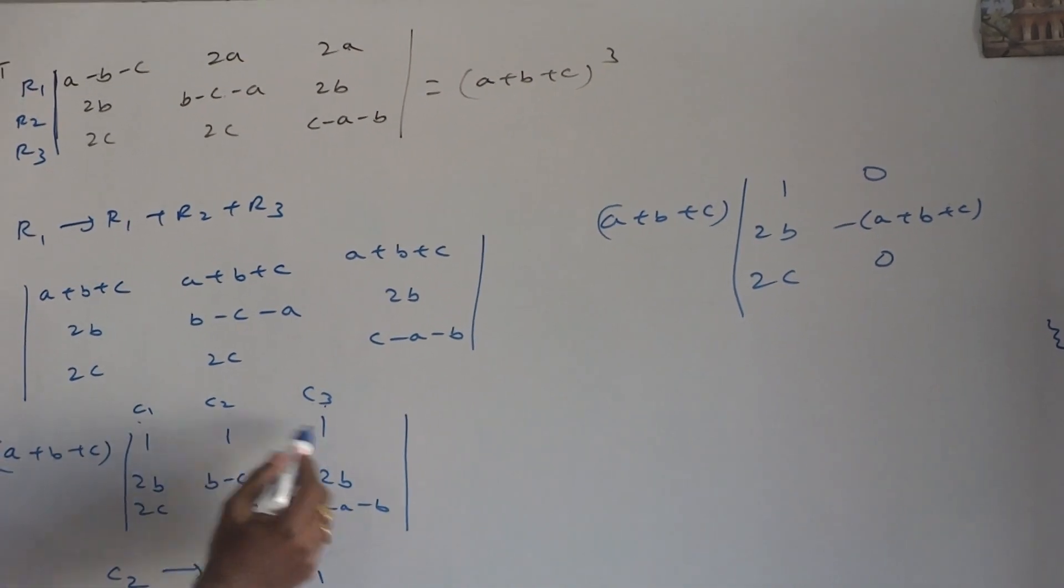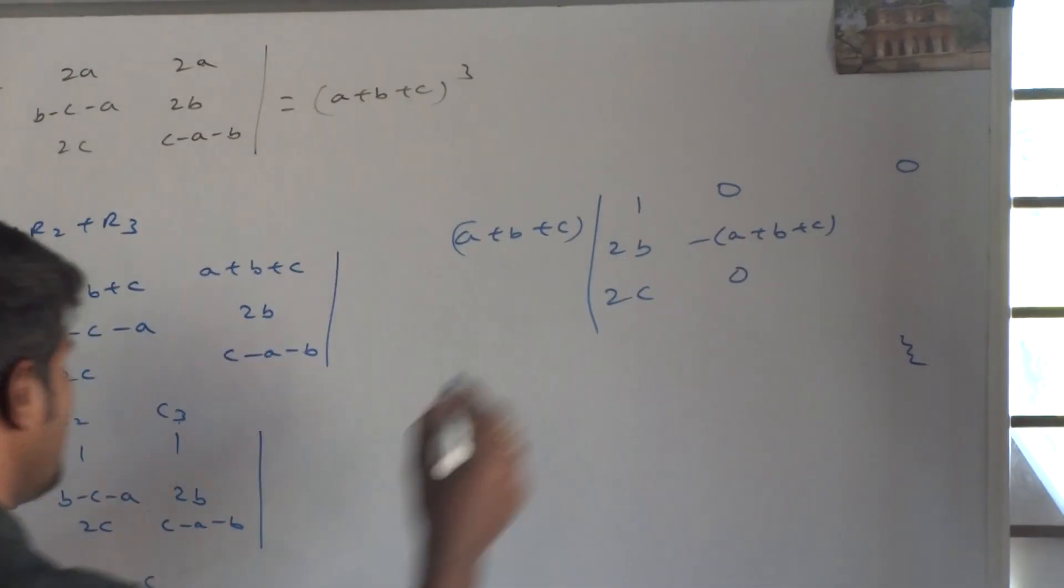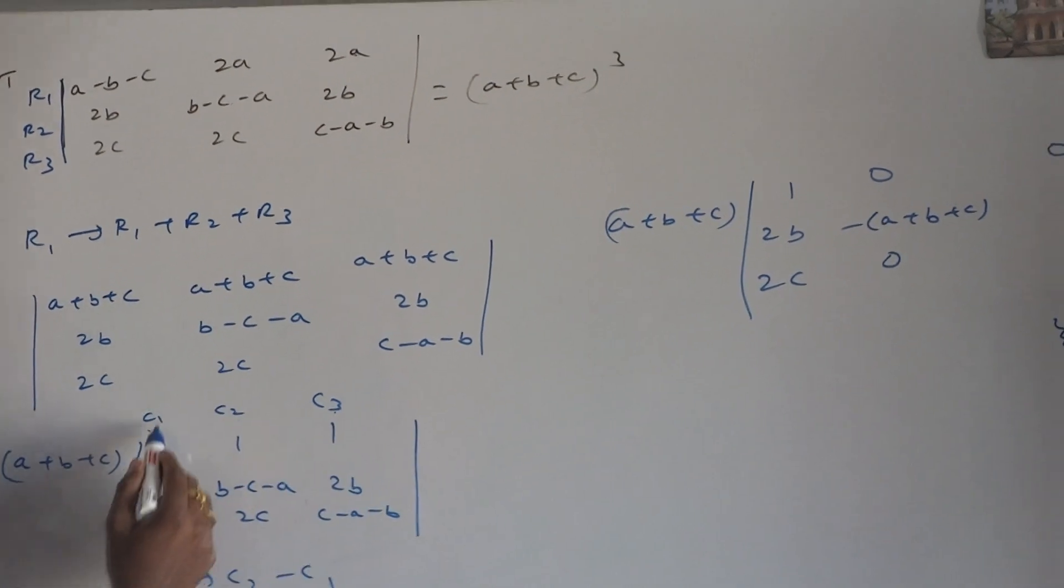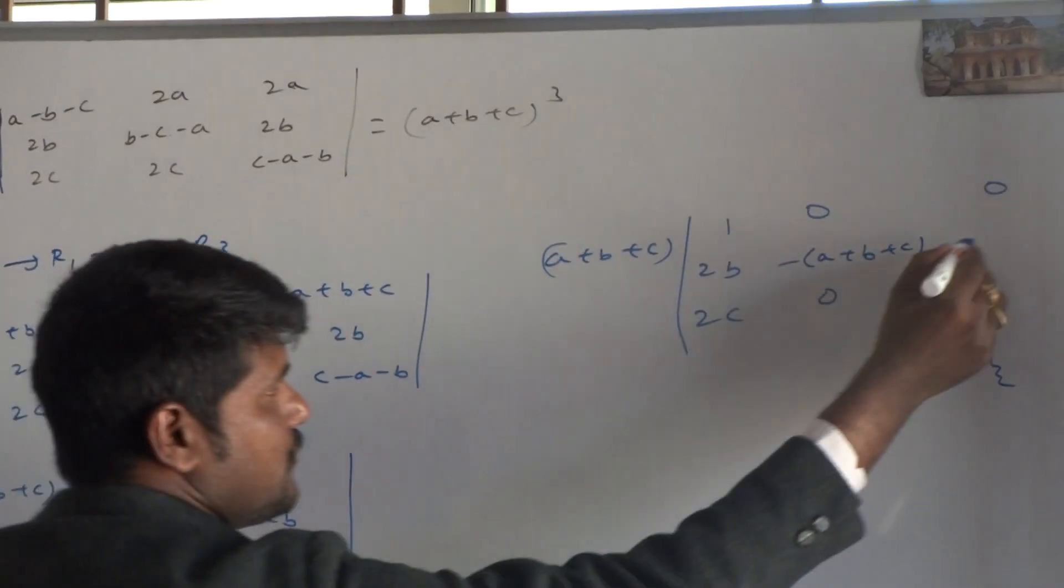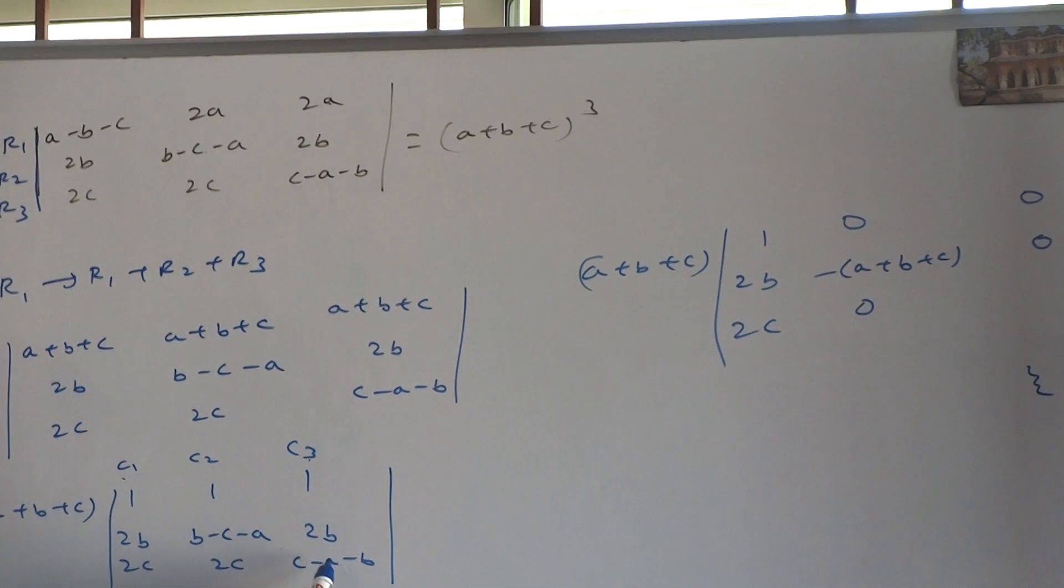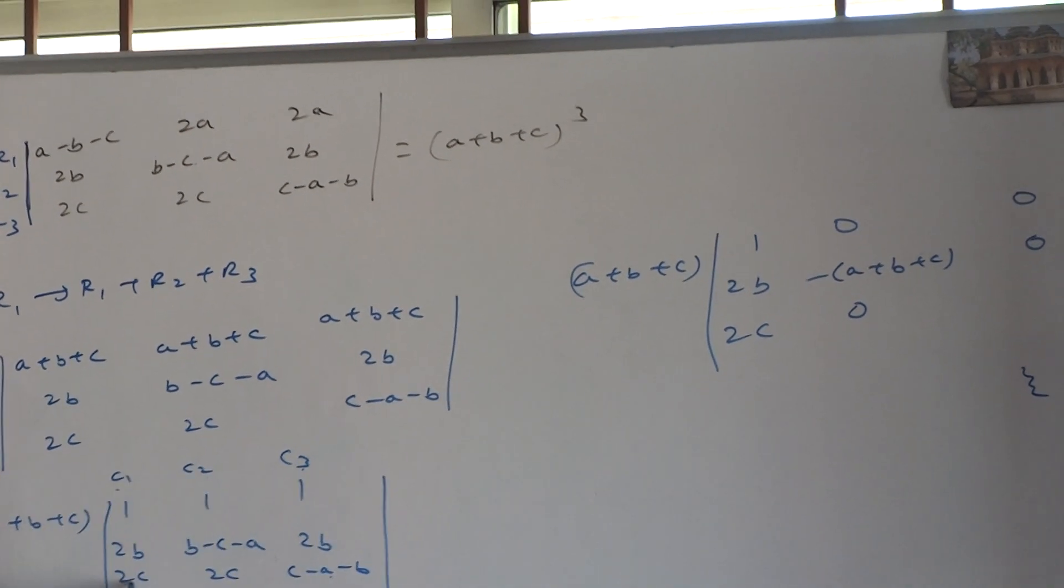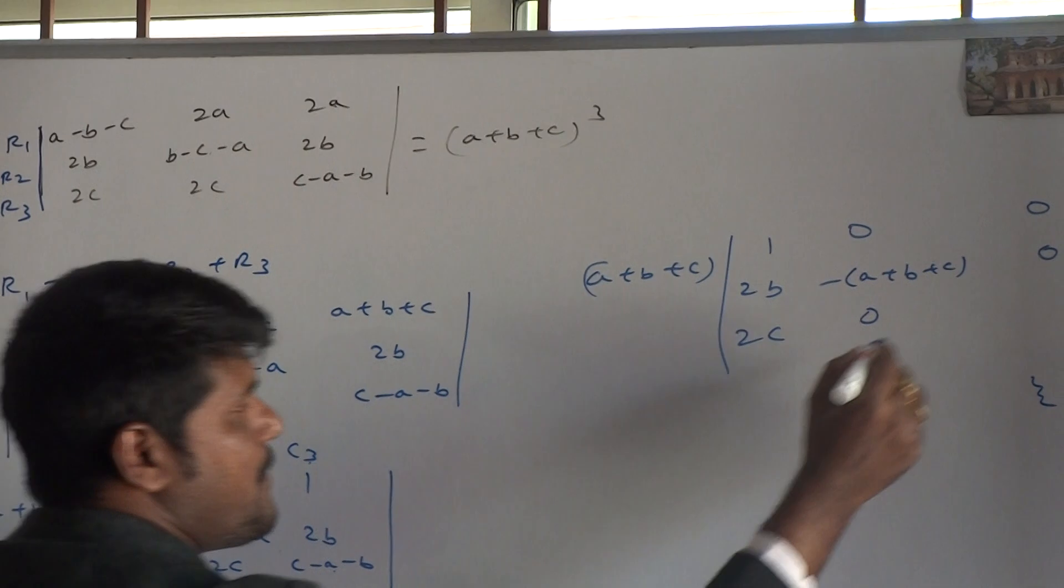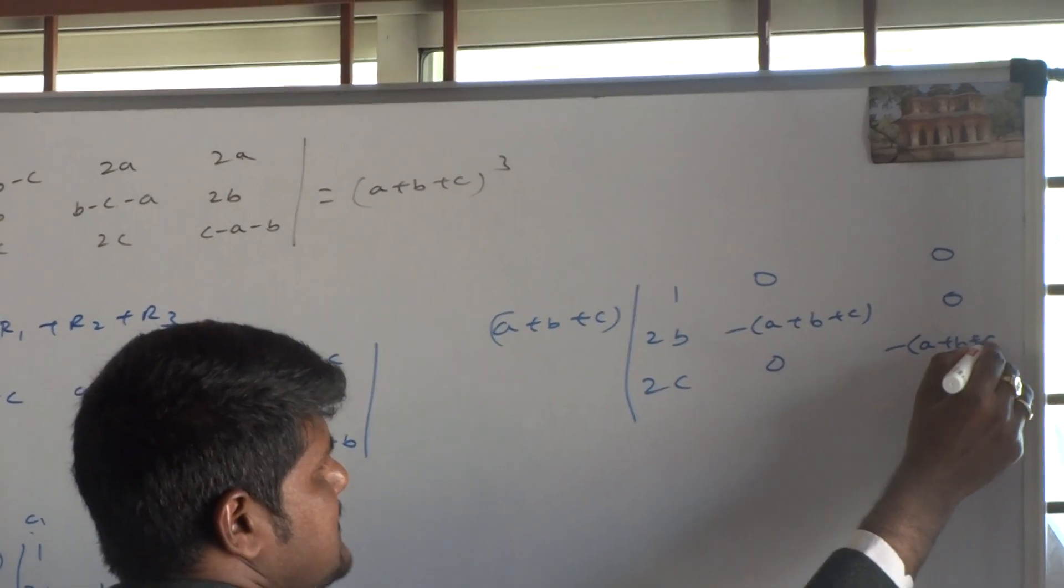Column 3 first element, column 1 first element. 1 minus 1. Zero. Column 3 second element, column 1 second element. 2B minus 2B. Zero. Minus A plus B. Column 3 third element, column 1 third element. C minus A minus B minus 2C. Minus of A plus B plus C.